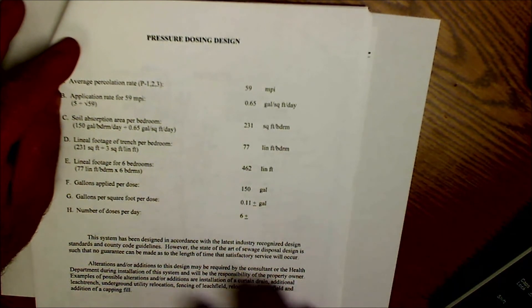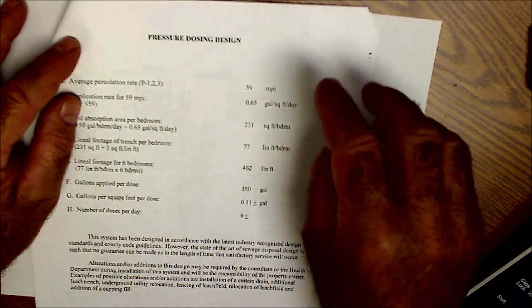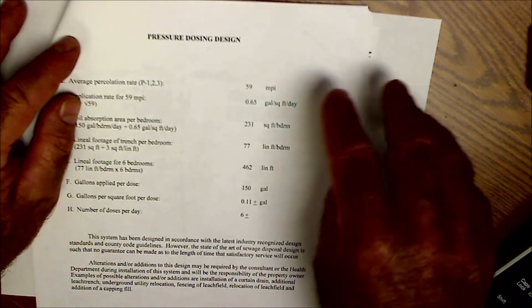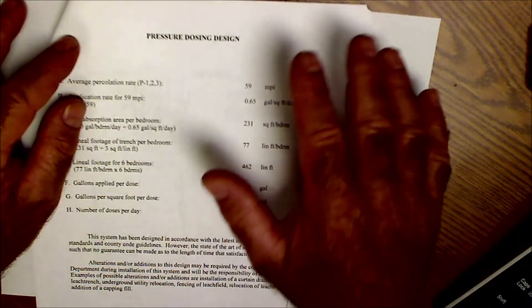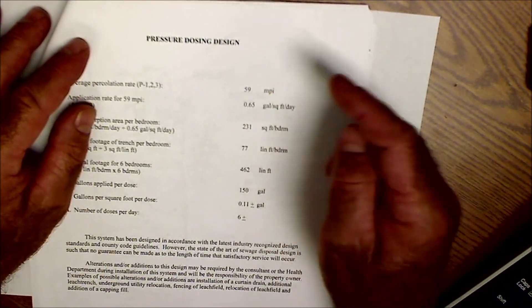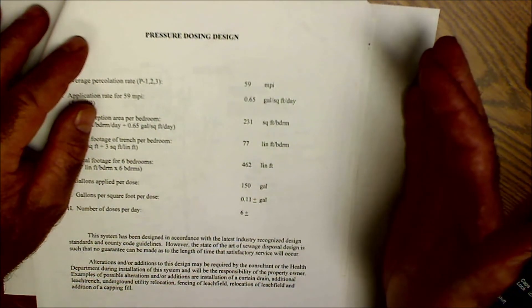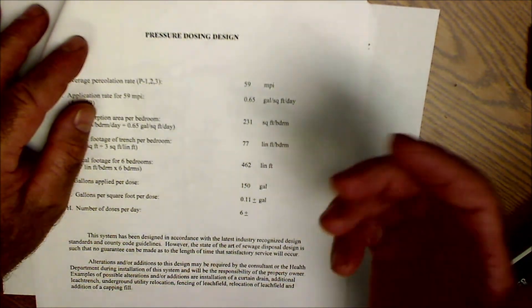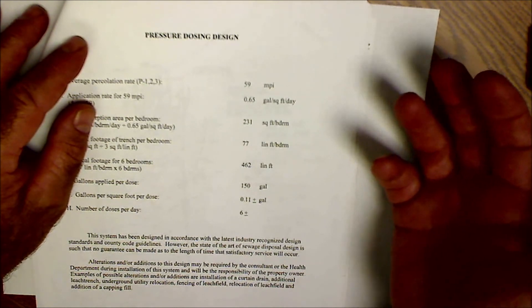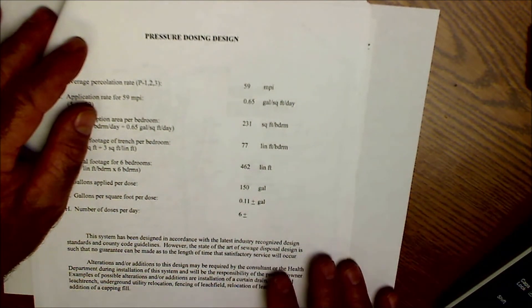To start, an environmental specialist and somebody from the county come out and do what's called the perk and mantle test. The perk test is where they drill or dig a hole down into the ground, fill it with water, and see how quickly that water perks through the soil — giving you an idea of how quickly sewage is going to go into the soil. The second piece is a mantle test where they dig a mantle and inspect the dirt. Once they have all that data, it goes back to the environmental consultant who creates the kind of system you're going to need. It's all in conjunction with your municipality and the environmental health person at the county or city. It's really important this is done correctly, otherwise sewage going into the soil can contaminate your well or somebody else's well.